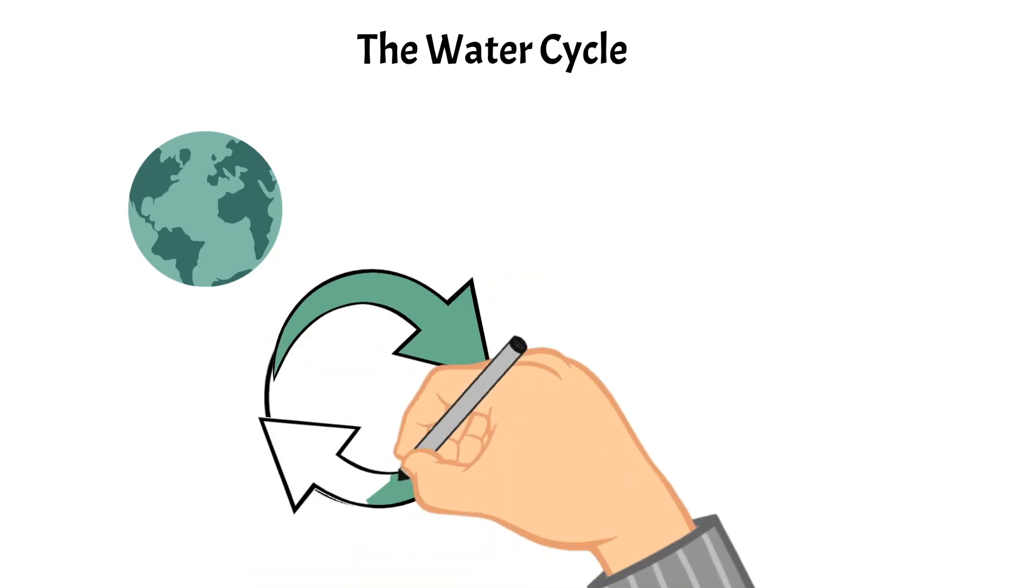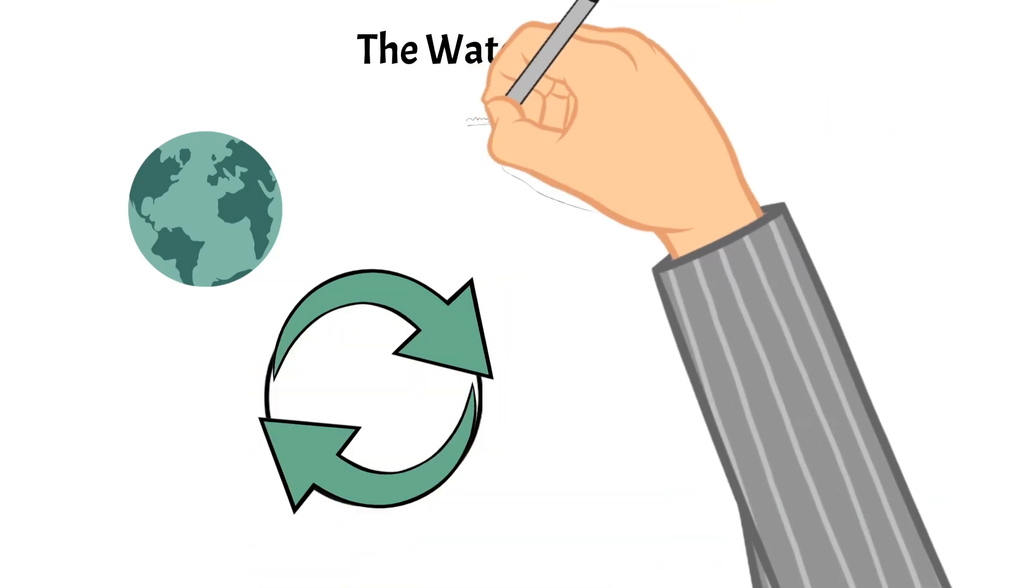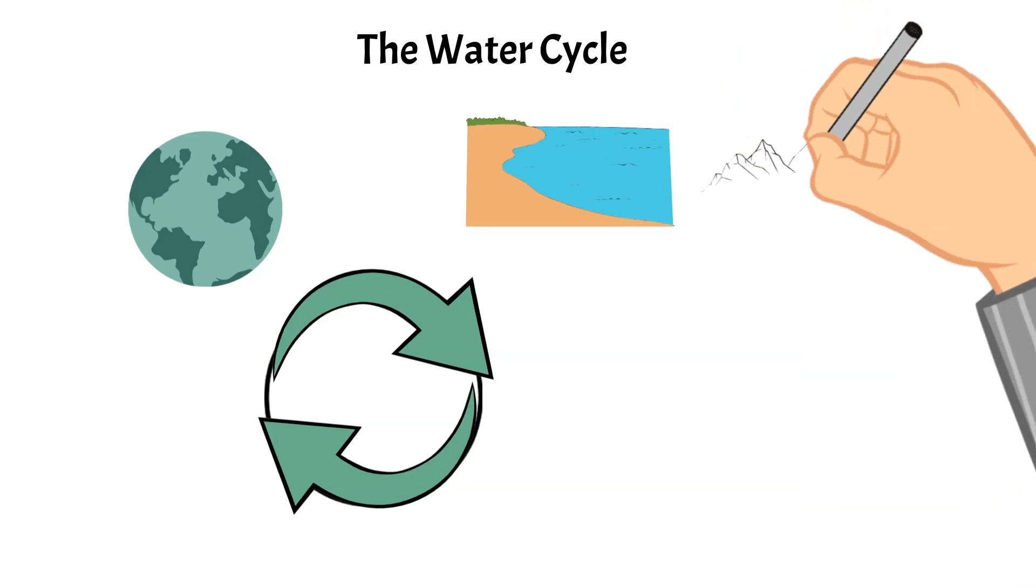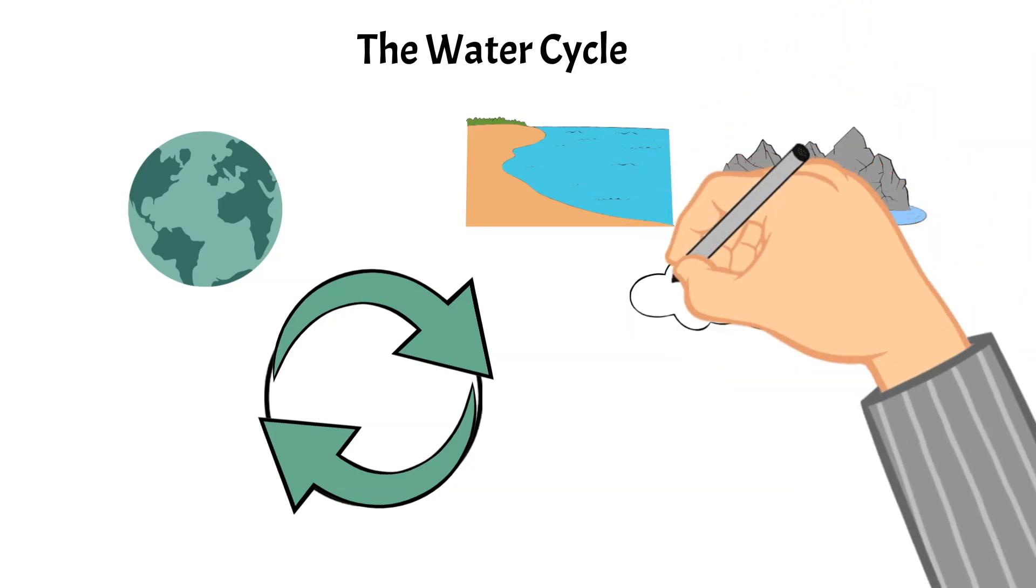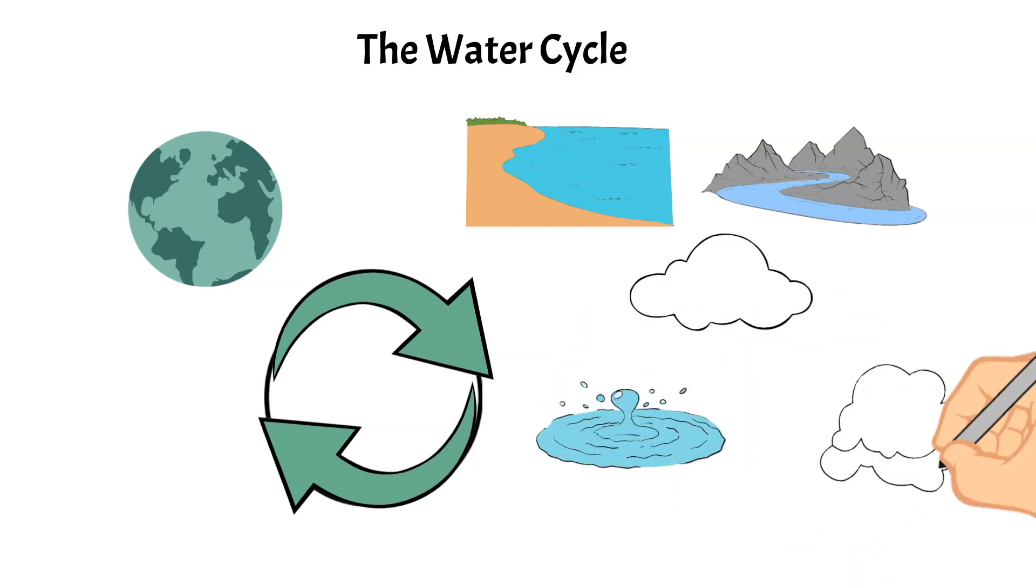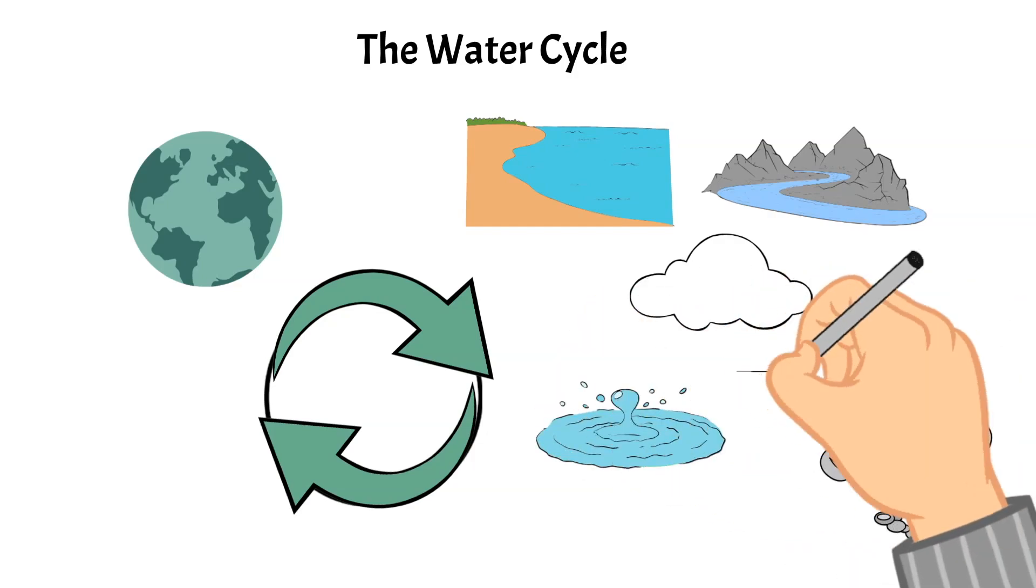The world's water moves between lakes, rivers, oceans, and the atmosphere, as well as on the land. It can be a liquid, a gas, or a solid.